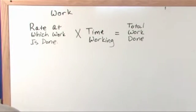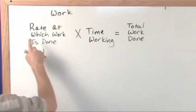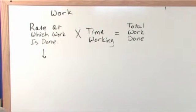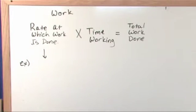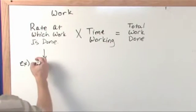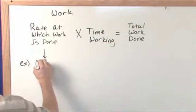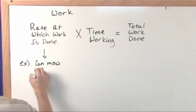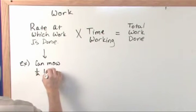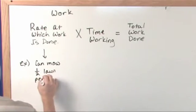So an example here for this part of it, which is the rate at which work can be done, an example would be that you can mow one half of a lawn per hour.